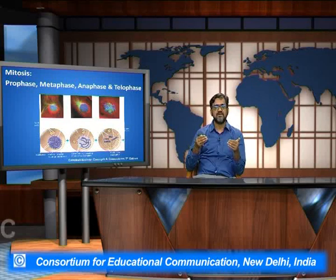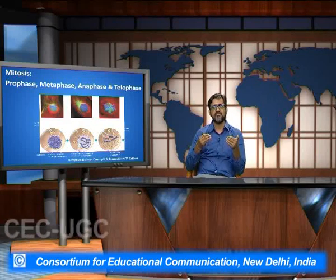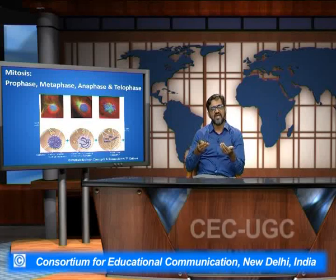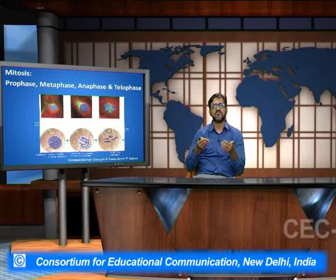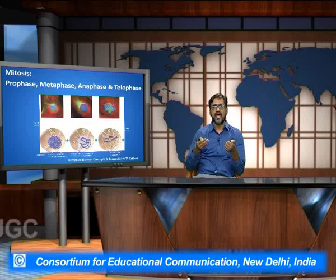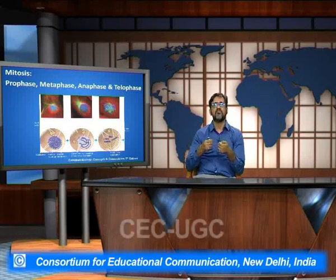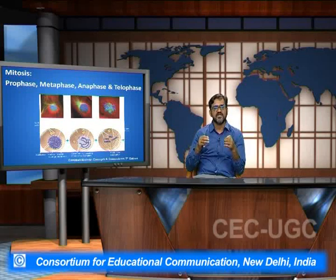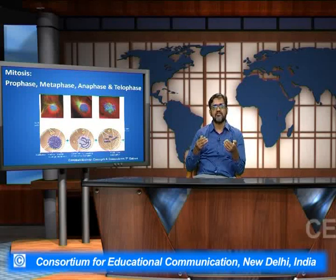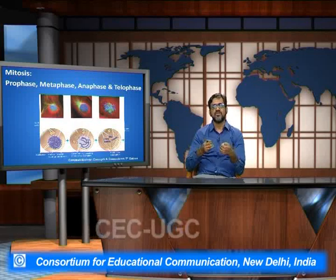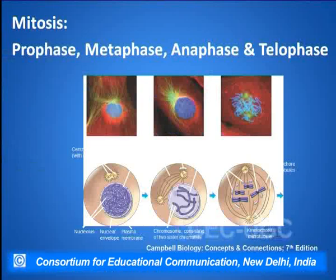As the spindle fibers get attached to the metacentric chromosomes, it moves into the next phase of division which is basically the anaphase. What happens is the non-sister chromatids are then pulled to the opposite poles by the shortening of the spindle fibers. Each of the non-sister chromatids starts moving into the opposite poles.